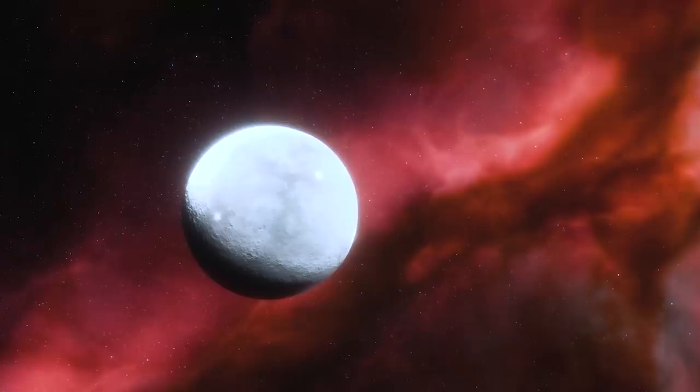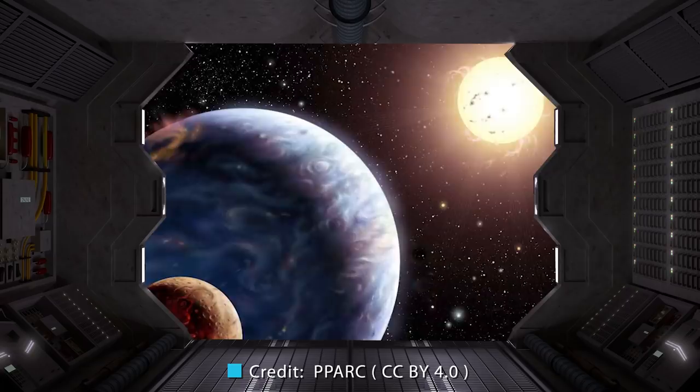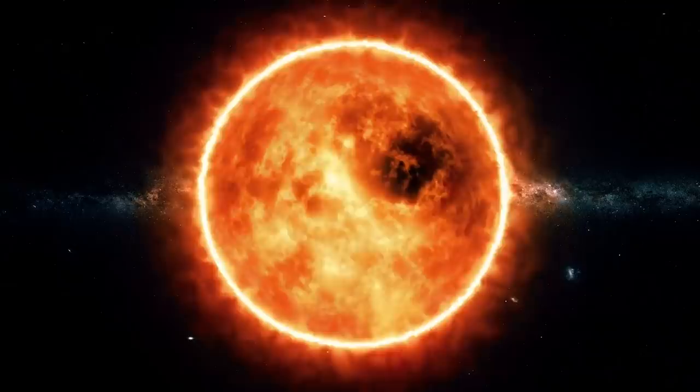The other two already known planets, Kepler-160b and Kepler-160c, are both larger than Earth and orbit much closer to the star. This makes them a lot less likely to be habitable due to the exposure from the sun's rays and the radiation it exudes.